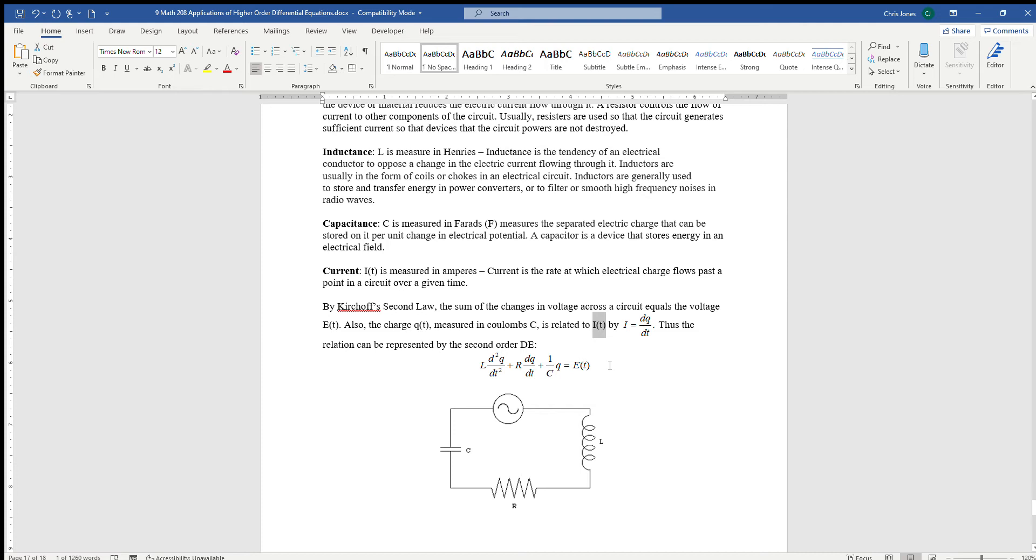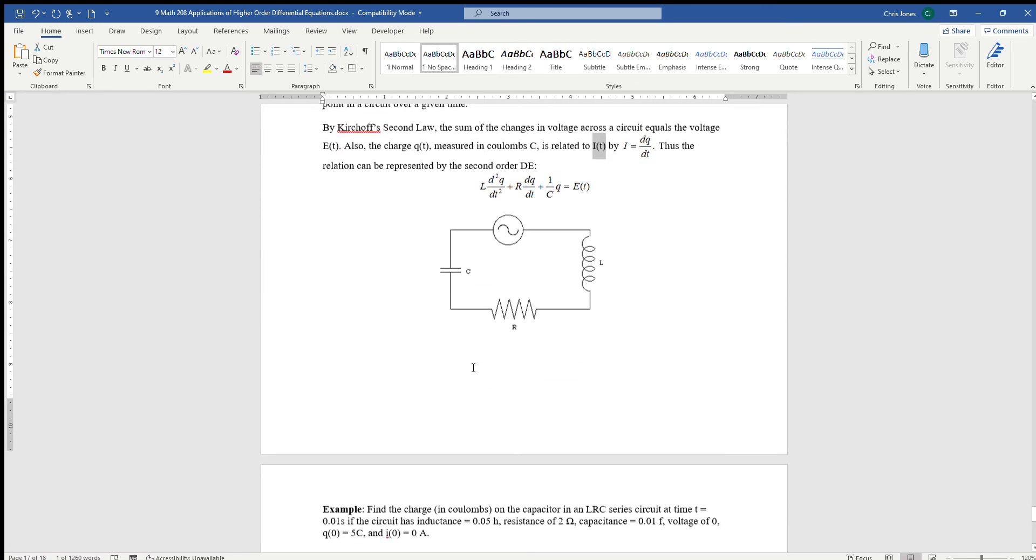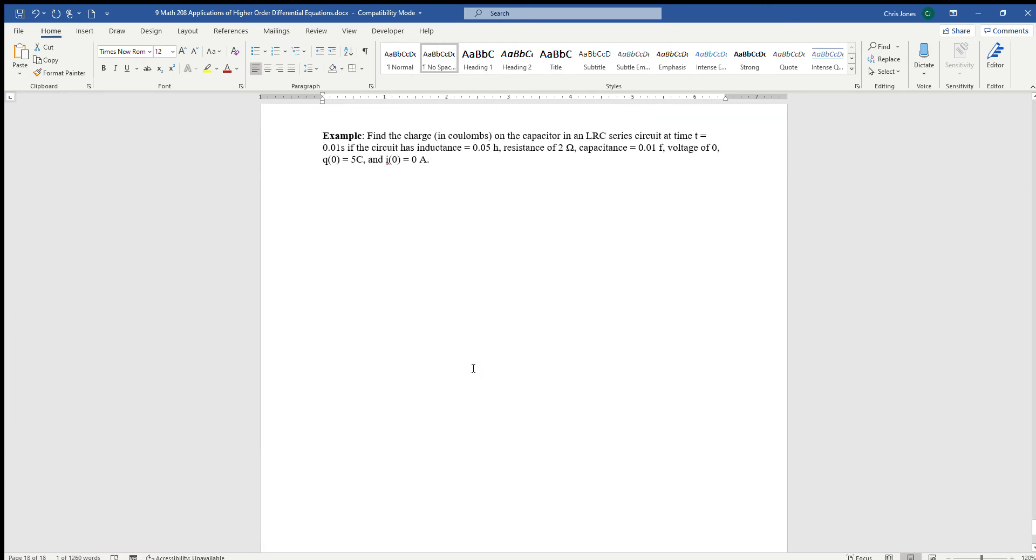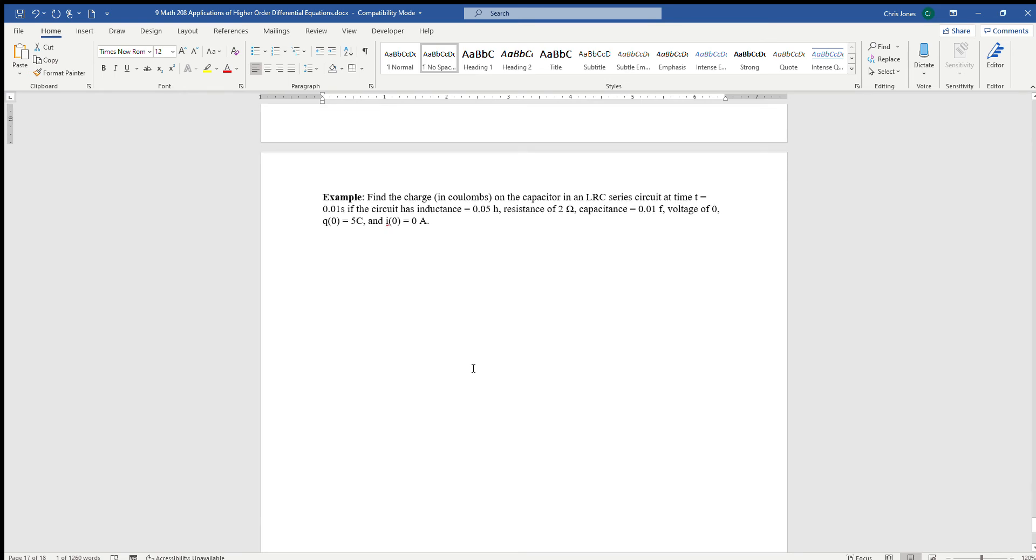Given all of this, we have a more complex circuit. We can use our formula to find the charge in coulombs. Let's look at an example. We want to find the charge in coulombs on a resistor of an LRC circuit at time 0.01 seconds. The circuit has an inductance of 5 henries, a resistance of 2 ohms, a capacitance of 0.01 farads, initial voltage of zero, and the initial conditions are 5 coulombs at steady state at zero. The charge for the derivative is zero amps.